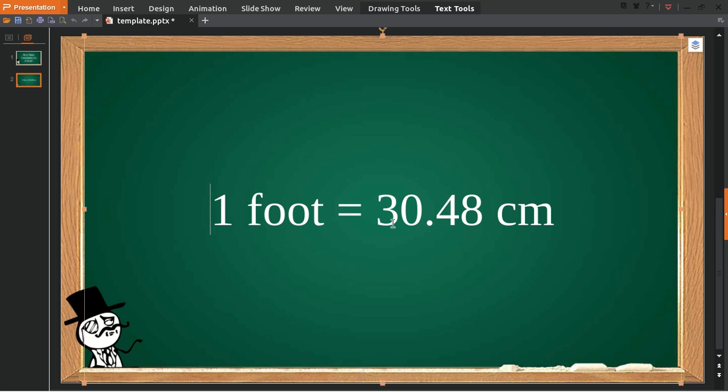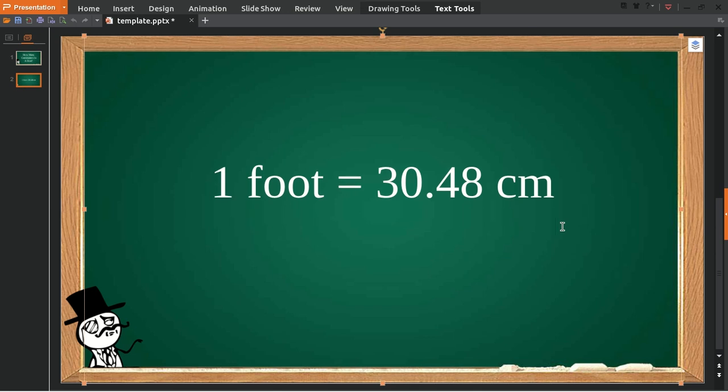So one foot is equal to 30.48 centimeters. Well, in case someone wants to know more about how to convert feet into centimeters, I'll show this for you. For example, I want